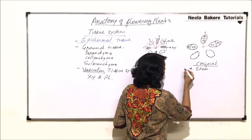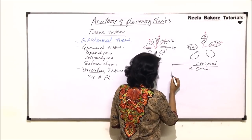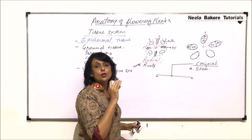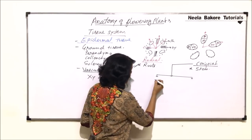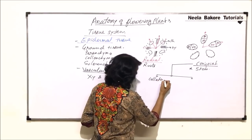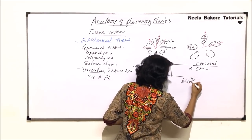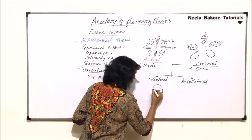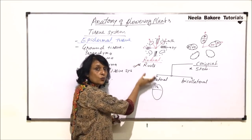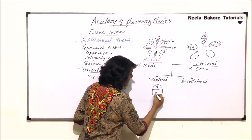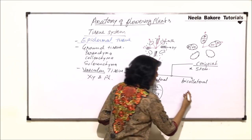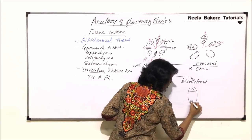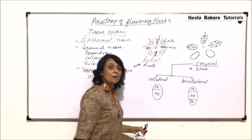Conjoint bundles can further be divided into two types on the basis of the position of xylem and phloem. One is called collateral and the other is known as bicollateral. In collateral vascular bundles, phloem is on the outer side — that is towards the epidermis — and xylem is towards the center. In the case of bicollateral, phloem is at both ends and xylem is in the middle.